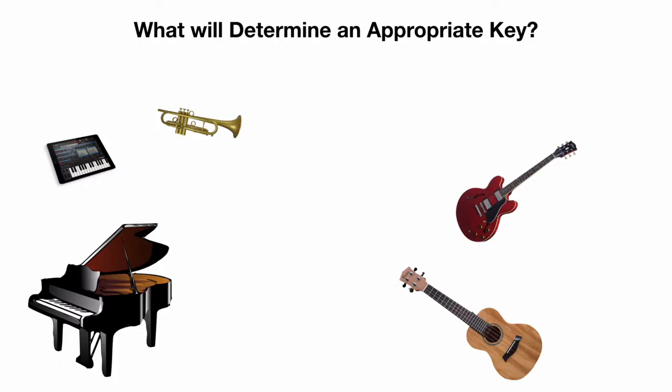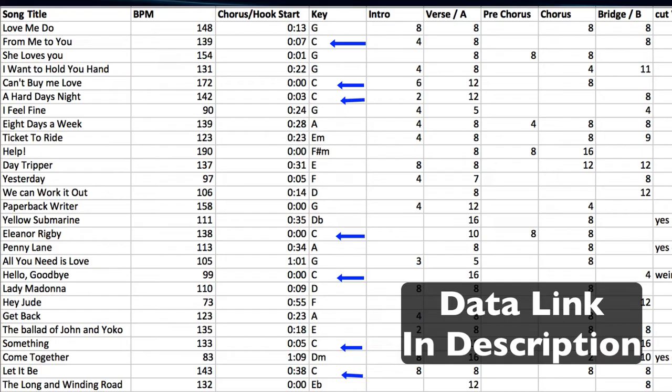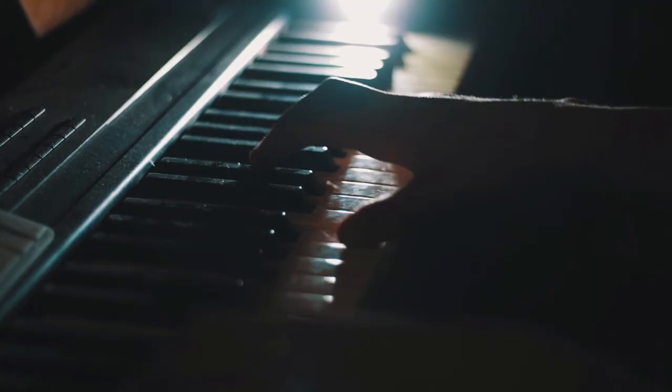Let's dive into the instrumentation. The key center of a song can often have its roots in the instrumentation used to compose it, as well as the range of the singer's voice. The Beatles often used keys like C major, G major, and A major — accessible keys with fewer than four sharps. Writing in these keys keeps the music relatively simple and guitar- and piano-friendly.